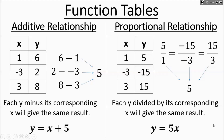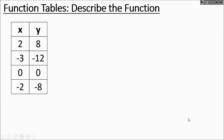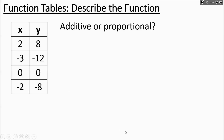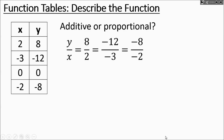Now we're going to look at some tables and figure out if each is proportional or additive, and find the equation that makes the table. For our first table, if we check 8 minus 2 and negative 12 minus negative 3, they don't work out to the same thing, so it's not additive. Let's see if they divide out to the same thing: 8 over 2 and negative 12 over negative 3 both work out to positive 4.